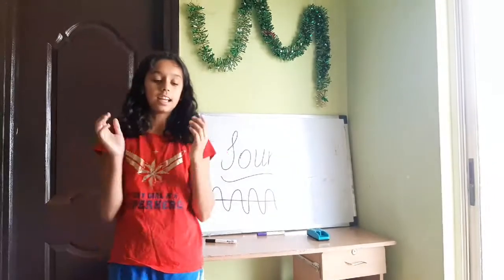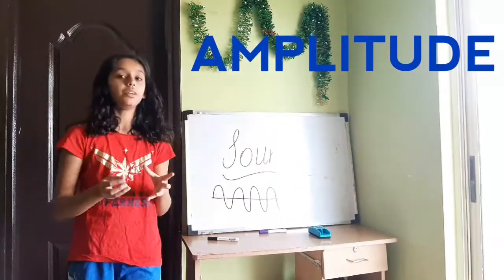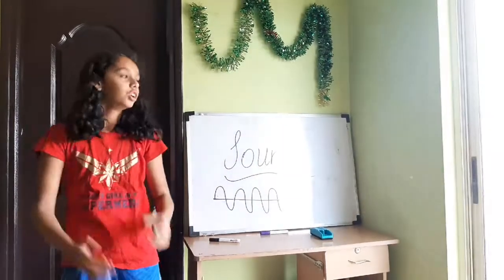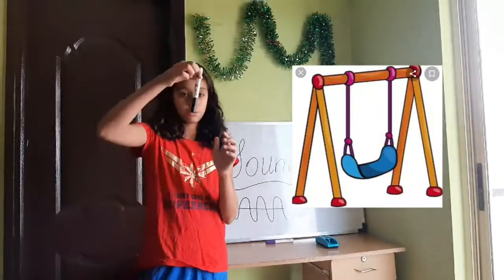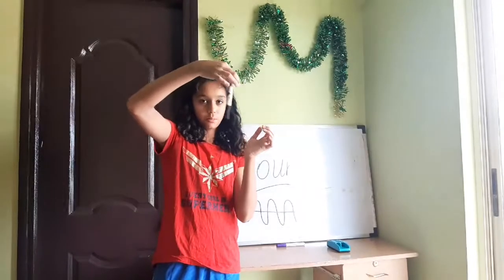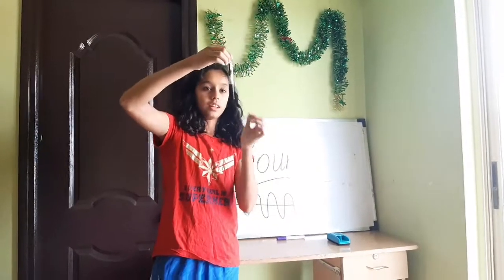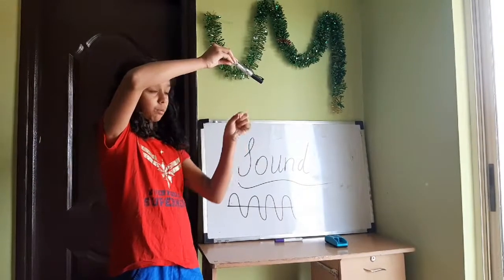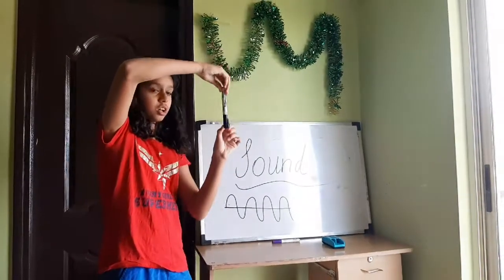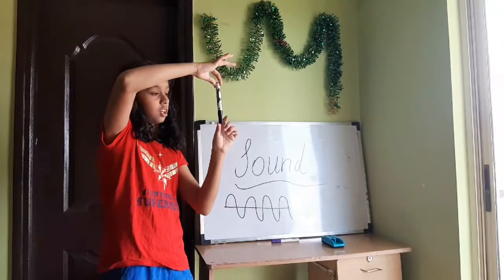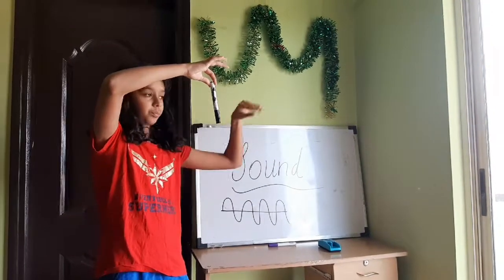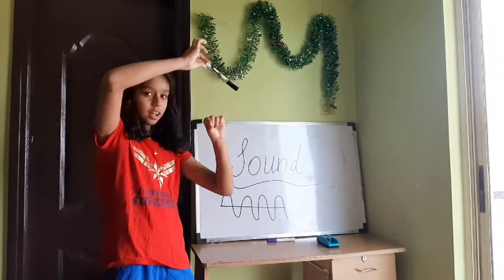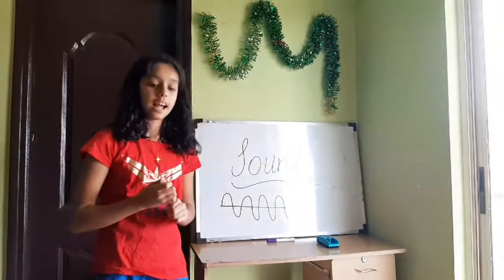Next is amplitude. Amplitude is the maximum displacement from its mean position. So imagine this is a swing and you just start it moving like this. When the swing goes up, the maximum displacement from its mean position — when the swing is at rest, the distance between the swing on top and the mean position — that's amplitude.